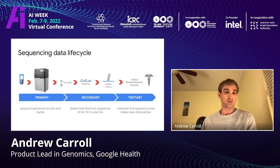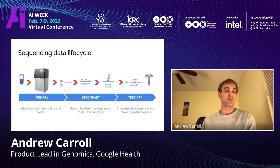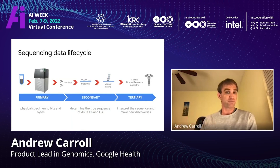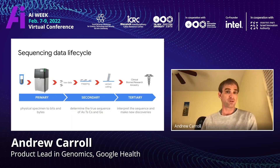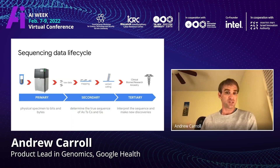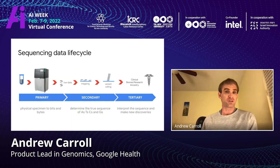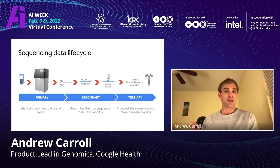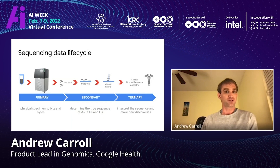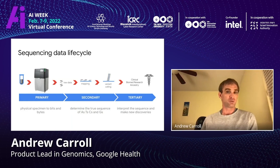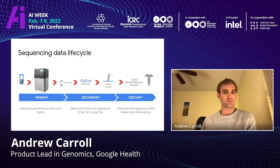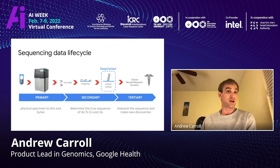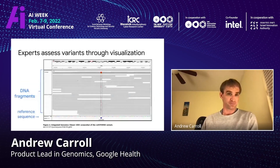Within the sequence data life cycle, information is produced by a sequencer. It's then generally mapped to a reference genome, and the positions that differ from that reference are identified to call variants. Those variants are used downstream for clinical reports and other biomedical research. DeepVariant performs this variant calling component of the life cycle.